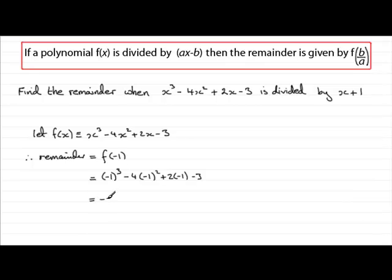And what's that going to come out to? Well, we've got negative 1 here. We've got minus 4, minus 2, and minus 3, which is minus 10. So the remainder is minus 10.